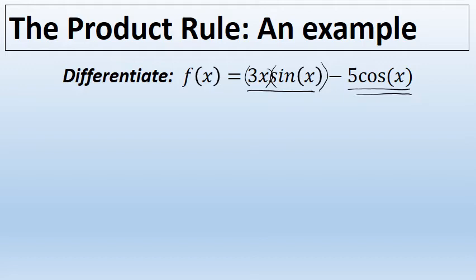While the second term does technically have two factors, negative 5 and cosine of x, the first factor is a constant, and using the constant multiple rule, when taking the derivative of that term the negative 5 will just come along for the ride and be part of the derivative of the cosine of x.